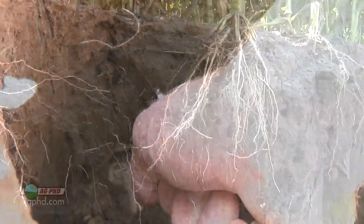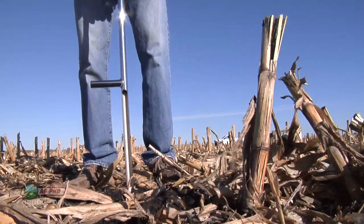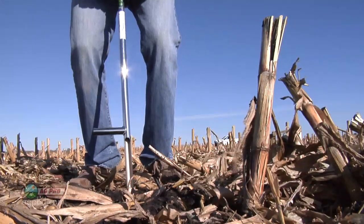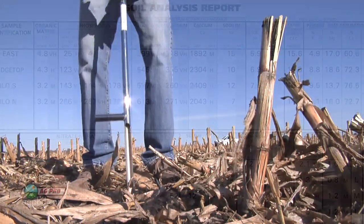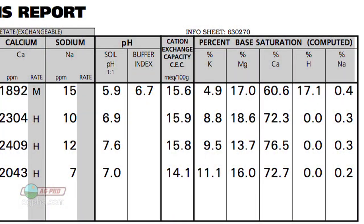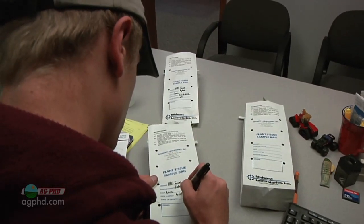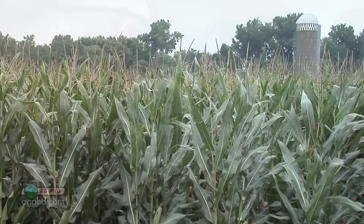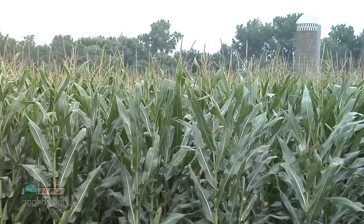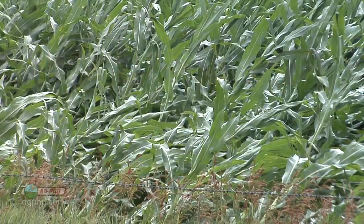Compaction could also be limiting root growth. If root growth looks fine, the next thing I want to look at is the nutrient load — I want to see the farmer's soil tests and plant tissue analysis. If you have good soil tests with base saturation tests done and plant tissue samples taken every week during the growing season, I can tell you right away if you're okay on nutrients or not.